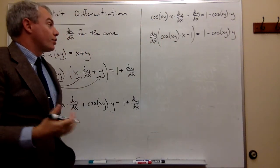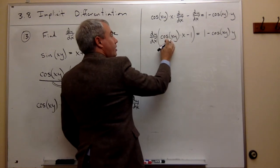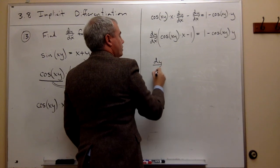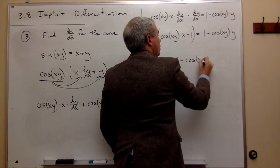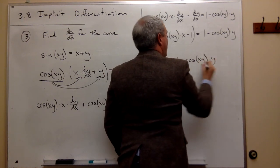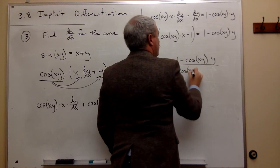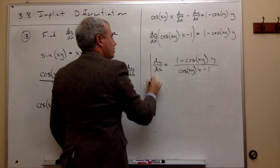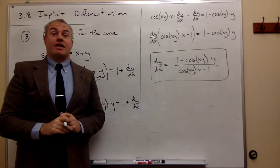So the last thing I have to do here is divide both sides of the equation by cos(xy) times x minus 1. So I get dy/dx equals 1 minus cos(xy) times y, divided by cos(xy) times x minus 1. And we have dy/dx.